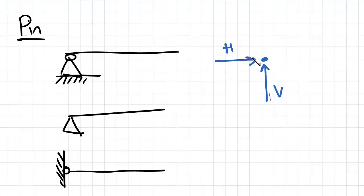A lot of the time it's going to be shown really simply just as a triangle. So just as a triangle there, that means a pin support.